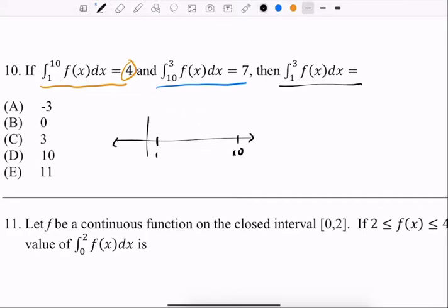Whatever that looks like from here to here is 4. Now this one says the blue one says from 10 to 3, so when we go backwards it would be positive 7. So what would that mean if we went forwards?